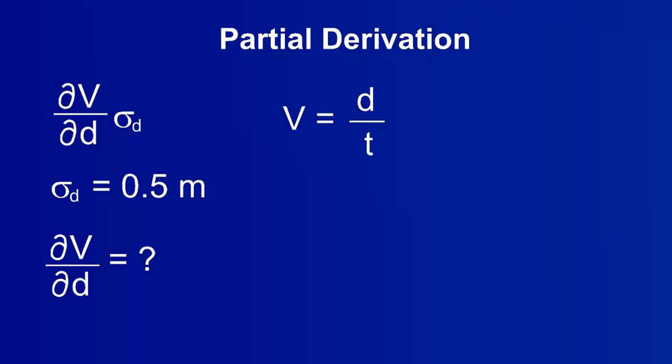Recall the equation for the velocity. To take the partial derivative, treat all variables other than the variable of interest, d, as if they were constants, and take the derivative with d as the variable.